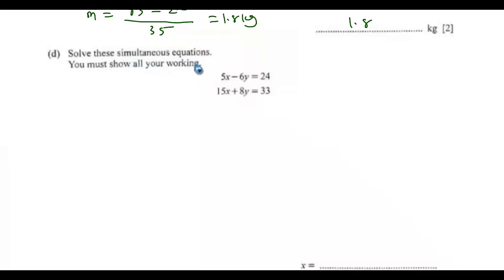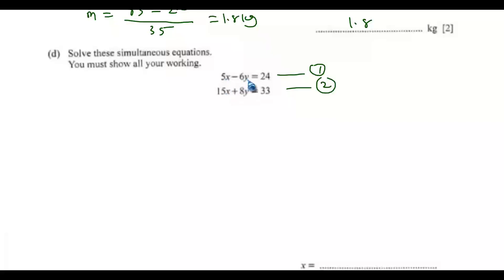Question 2d: Solve the simultaneous equations — you must show your working. I'll use the elimination method as it's easier and faster. We have equation 1 and equation 2. For elimination, the coefficients of either x or y in the two equations must be equal. The coefficient of x is 5 in equation 1 and 15 in equation 2; the coefficient of y is negative 6 and positive 8 — they are not equal.